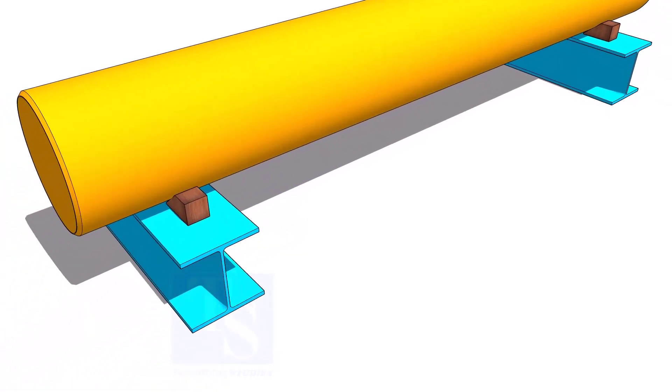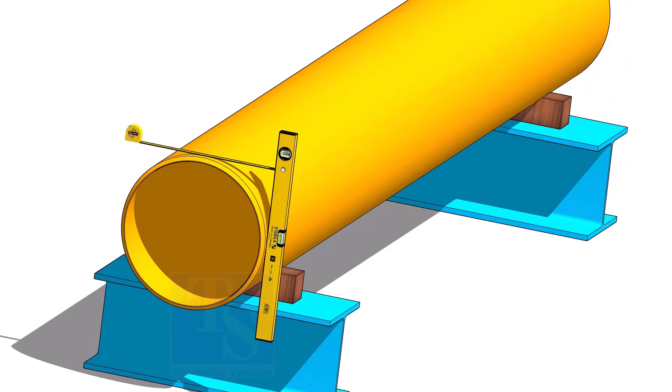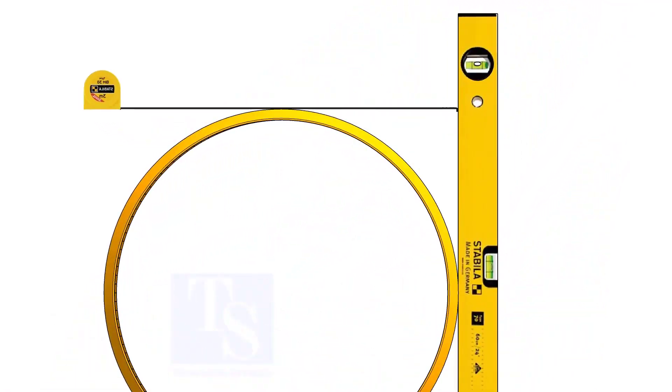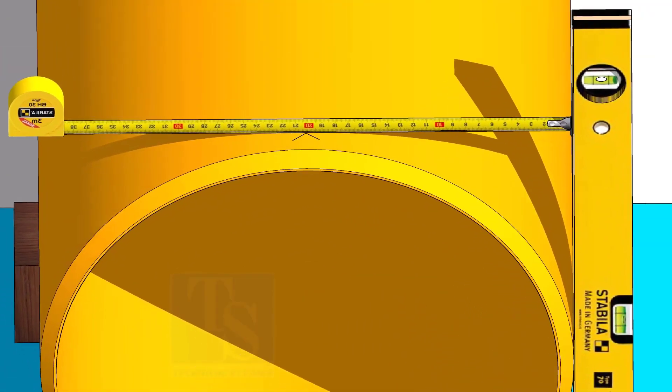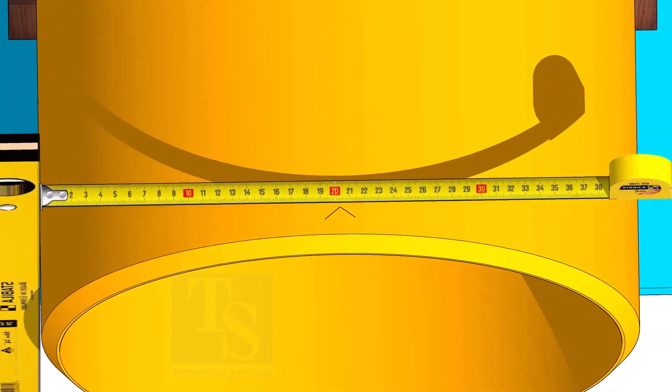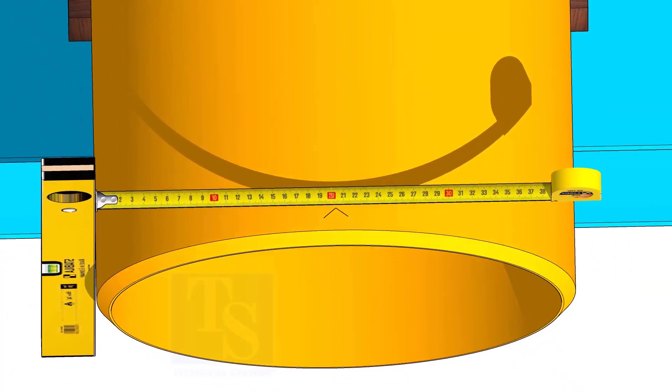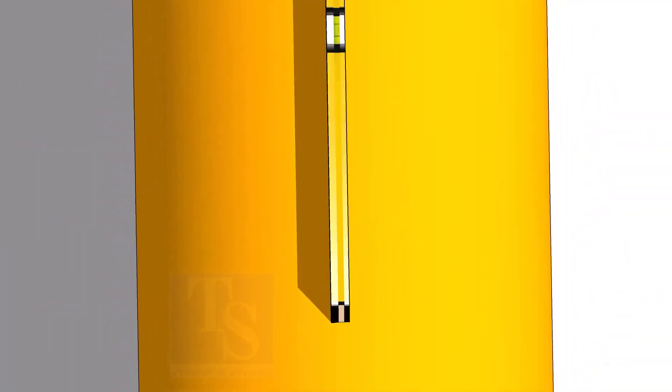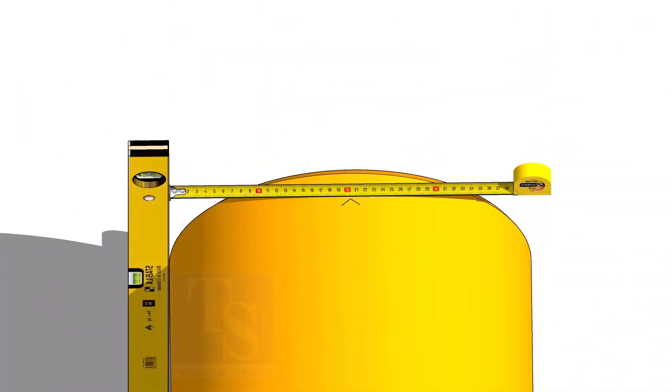After leveling the pipe, hold a level bottle vertically at the side of the pipe as shown. Mark the half OD on the top of the pipe and cross-check from the opposite side. Mark the center of the other end of the pipe and draw the center line.